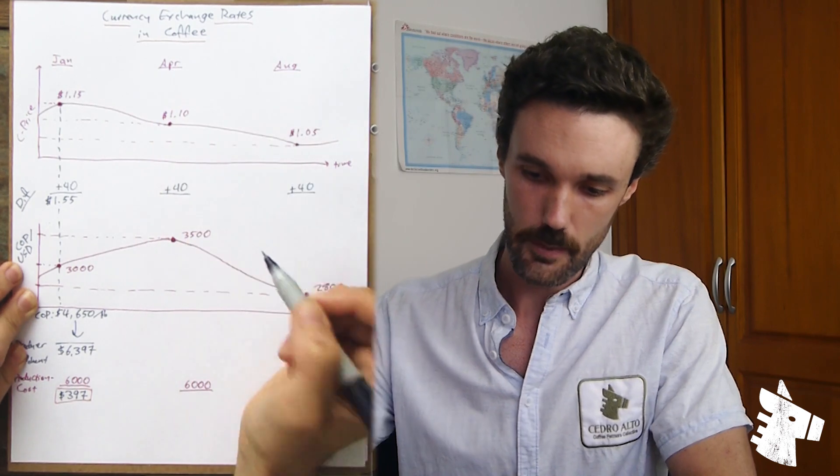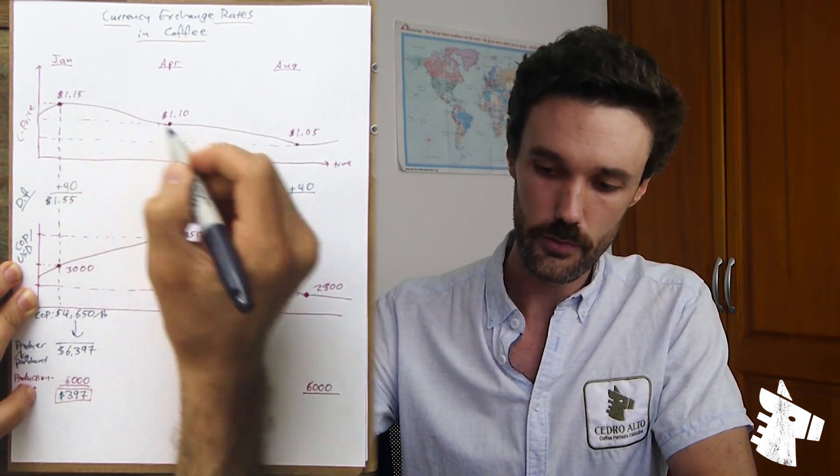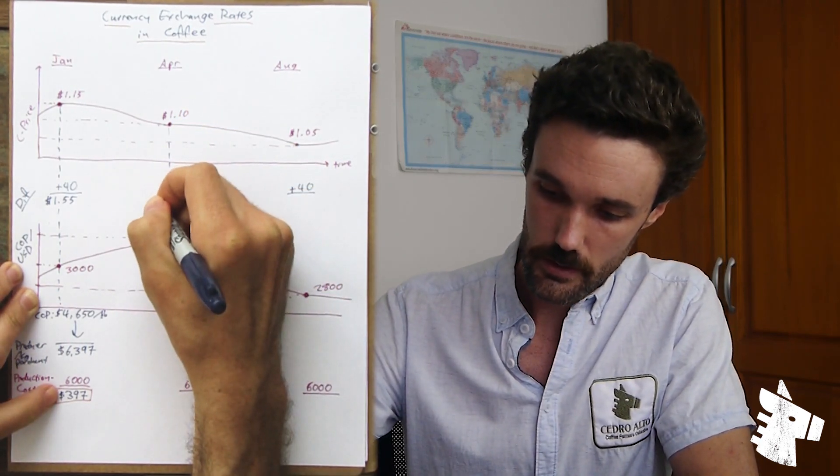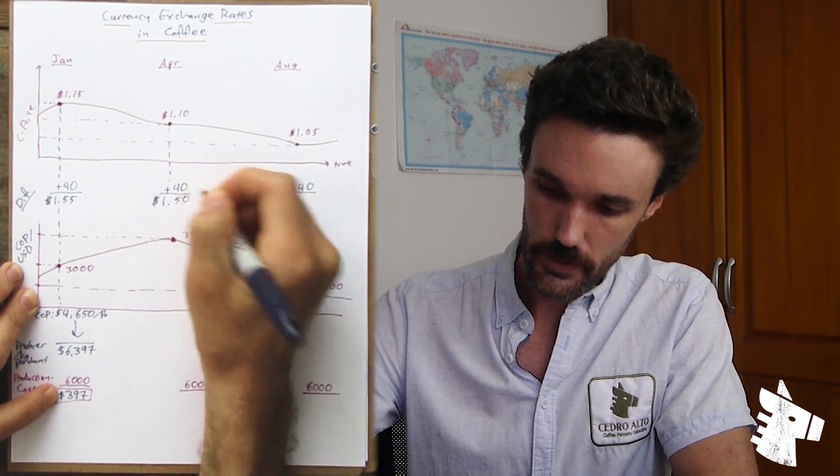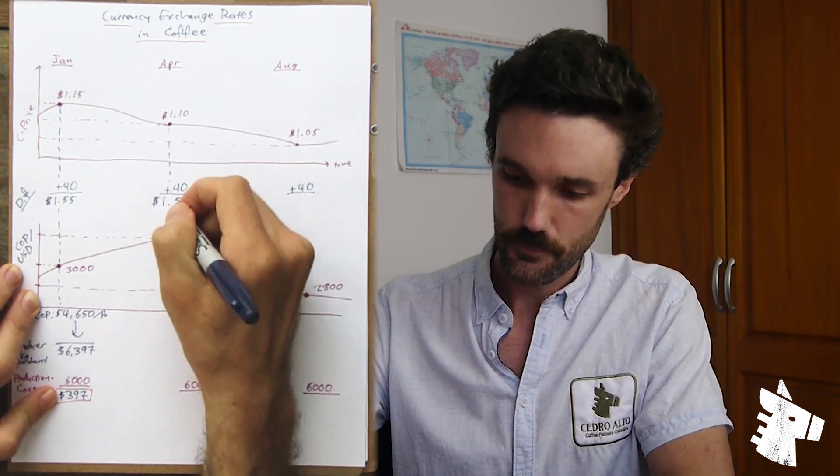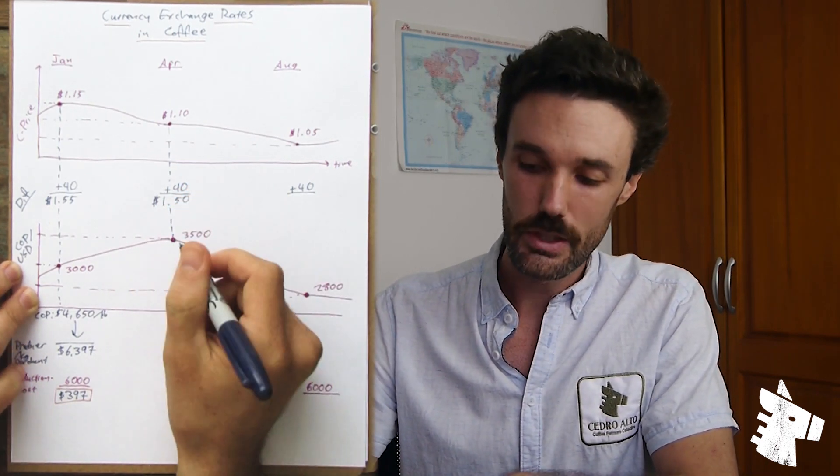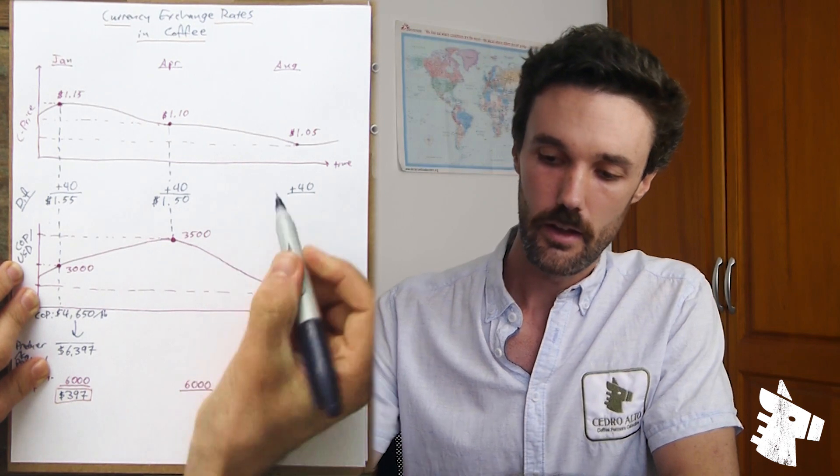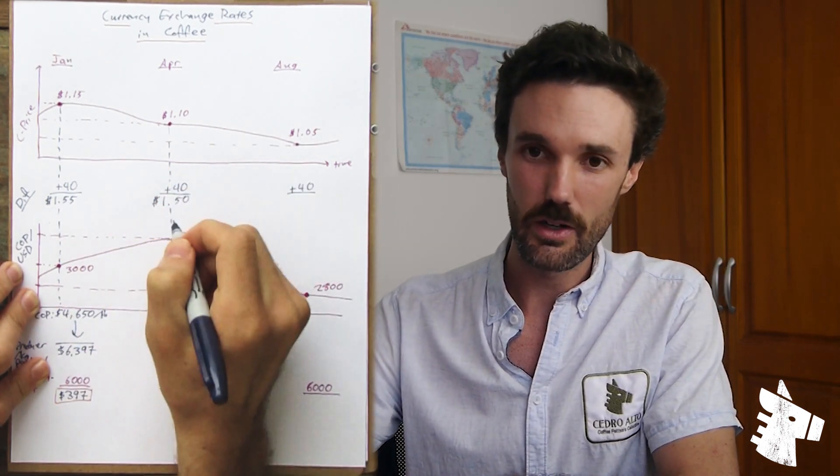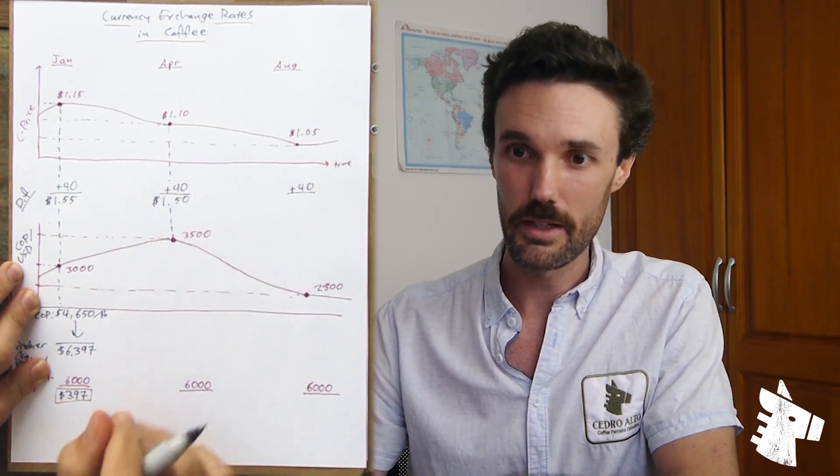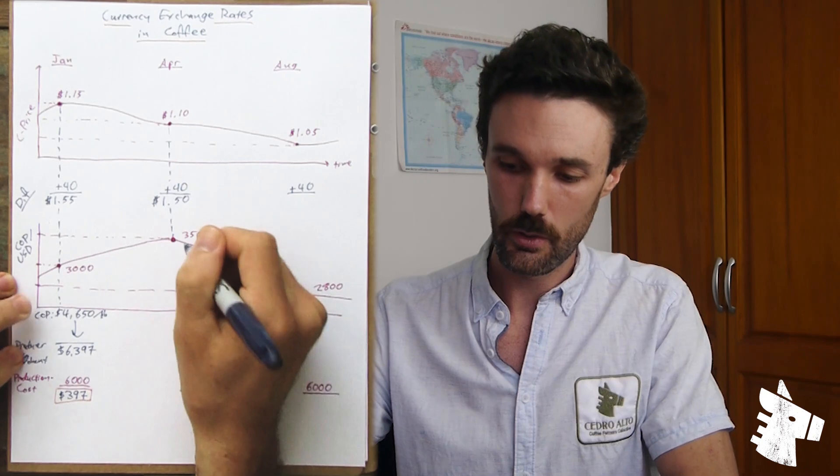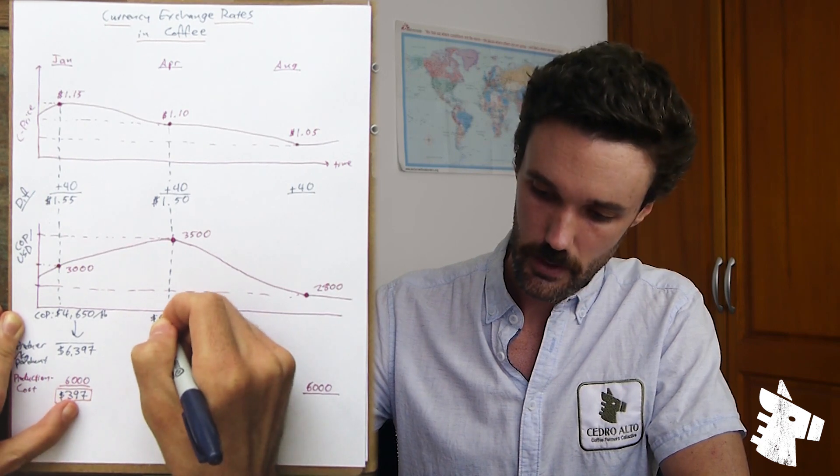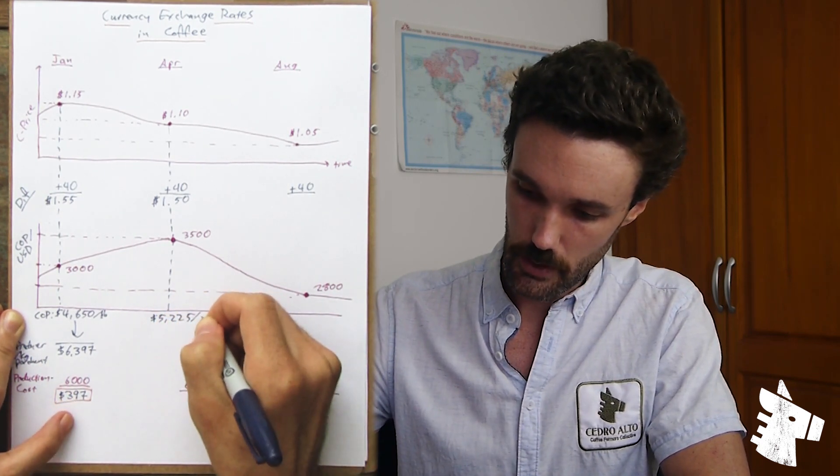Let's say in April of the same year, the C price has fallen from $1.15 to $1.10. The differential is still plus 40. So our FOB price in this case will be $1.50. The FOB absolute price has fallen. However, the Colombian peso has also depreciated in relation to the US dollar. Therefore, it takes more Colombian pesos to buy one US dollar. If we're being paid as Colombians in US dollars, those dollars are now worth more Colombian pesos to us. 3,500 Colombian pesos per one US dollar. So in that case, this USD FOB price translates to 5,225 pesos per pound.